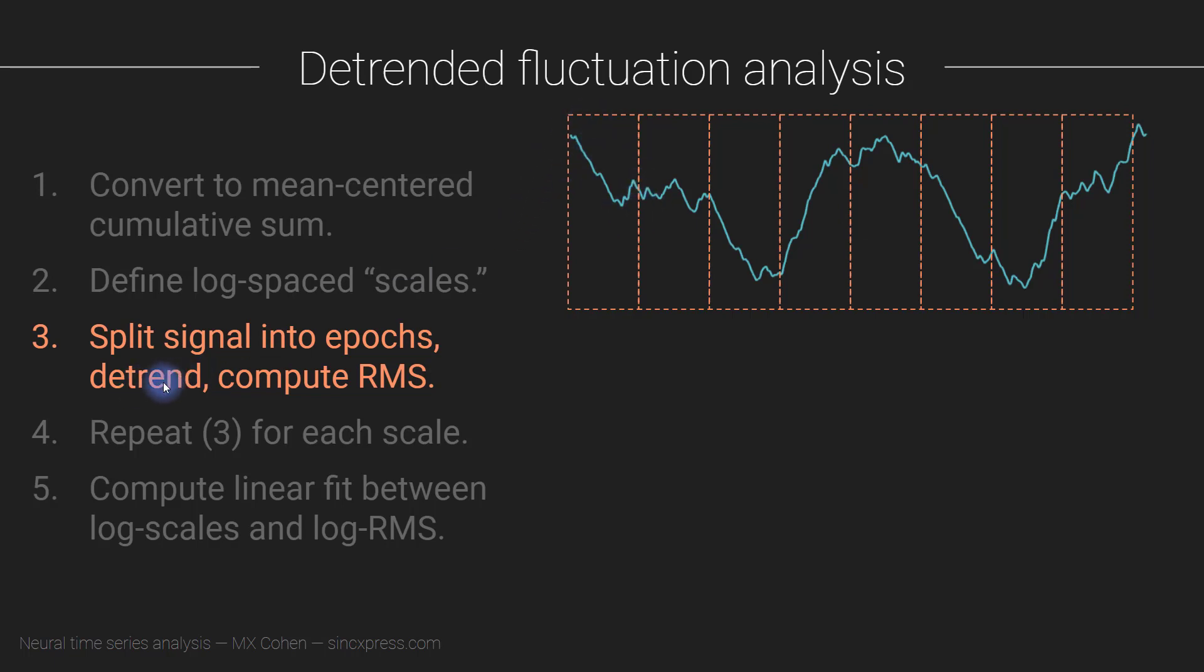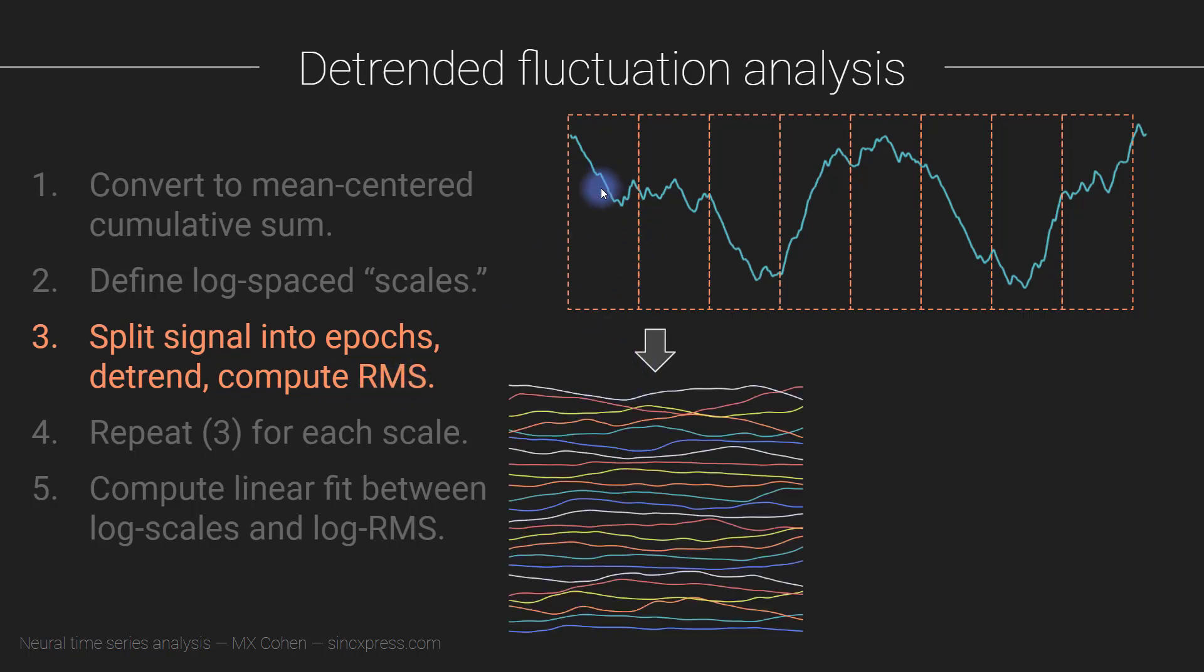Okay, so then each segment gets detrended, and then you compute the root mean square. So that would look something like this. Now I've converted all of these segments in here into these segments, these time series. Now this looks like it might be short, but each one of these is, you know, the timescale here is 23 seconds, so this could actually be pretty long. So this first signal here, this first segment here would come from this one, and then it's just detrended. So you remove this trend line. And then for each one of these, you compute the root mean square.